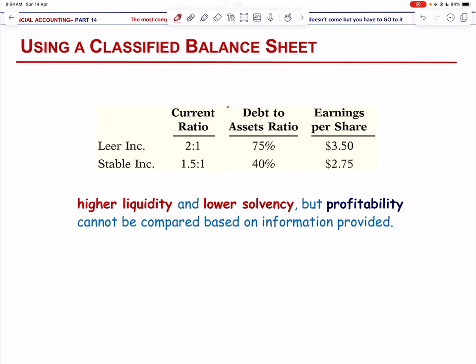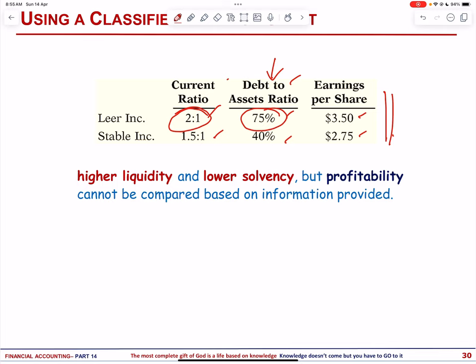Comparing ratios across companies: Layer has a higher current ratio than Stable, indicating higher liquidity. However, Layer also has a higher debt-to-assets ratio, indicating lower solvency. We cannot assess profitability from these numbers alone because the information is incomplete, but we can conclude that Layer has higher liquidity and lower solvency.